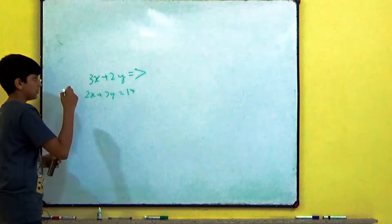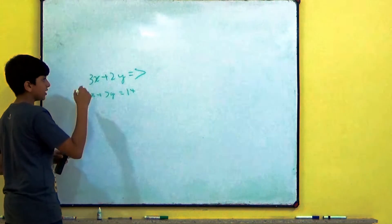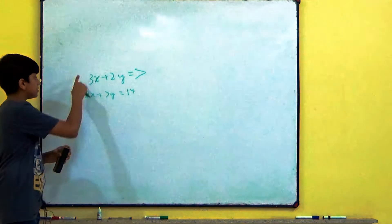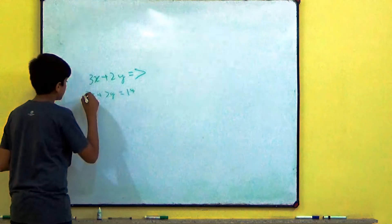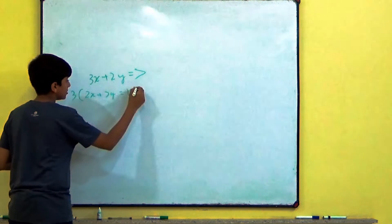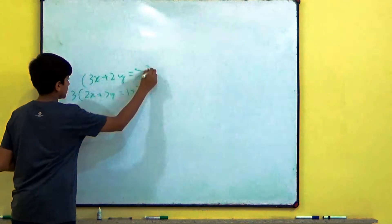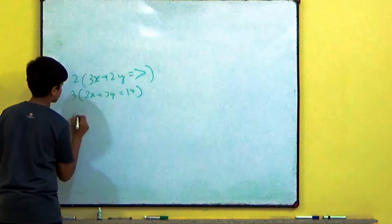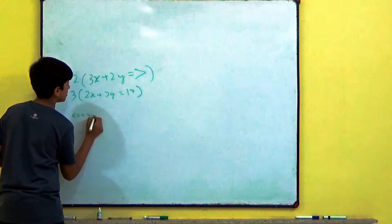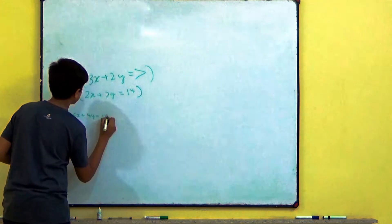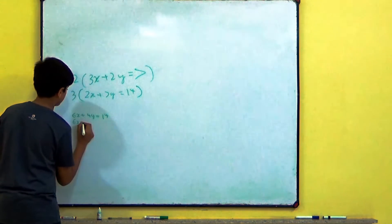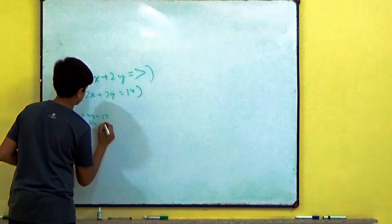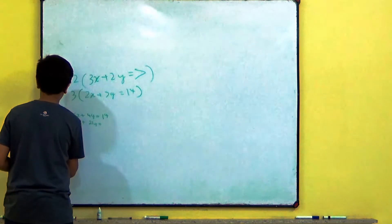It's 3X plus 2Y is equal to 7 and 2X plus 7Y is equal to 14. In elimination method, we have to multiply by such a number in which way these two terms will get equal. So, if I multiply this whole term by 3 and if I multiply this by 2, we will get 6X plus 4Y is equal to 14.